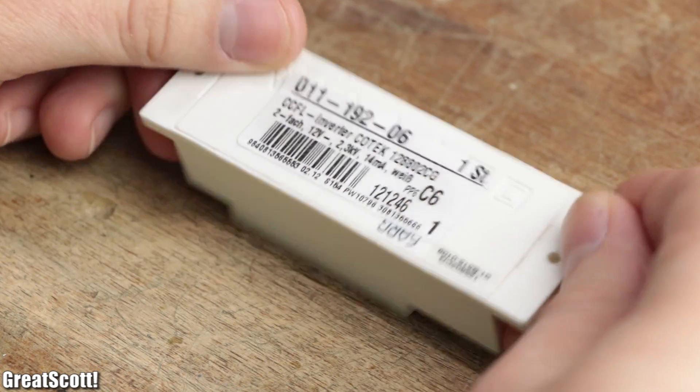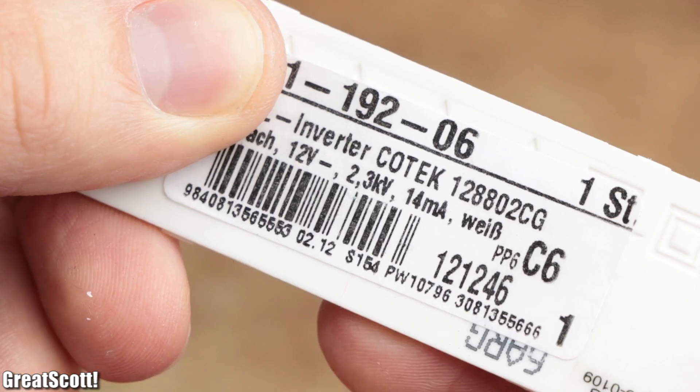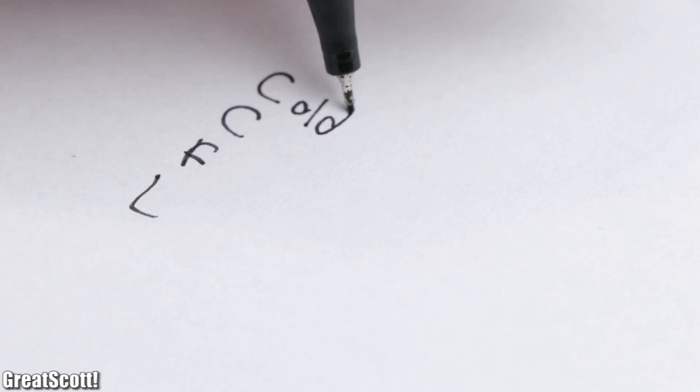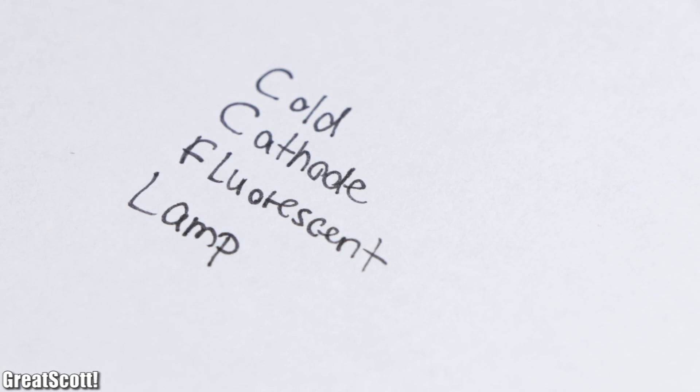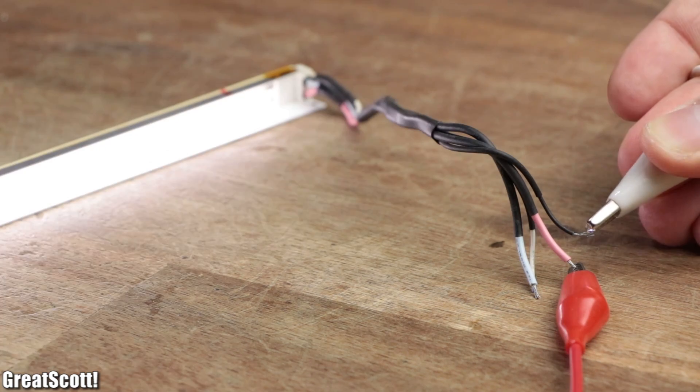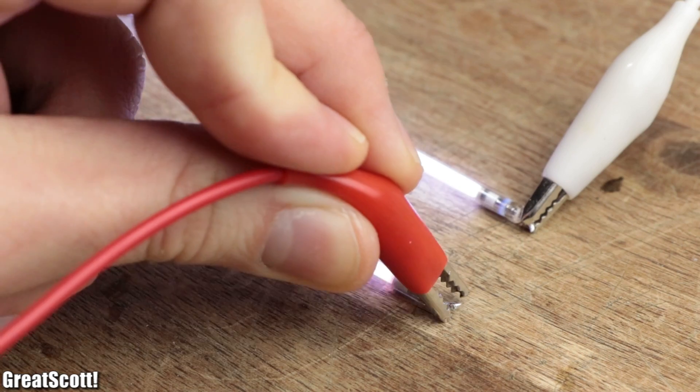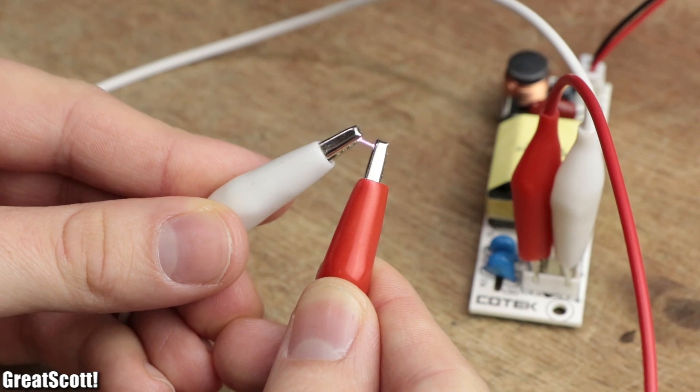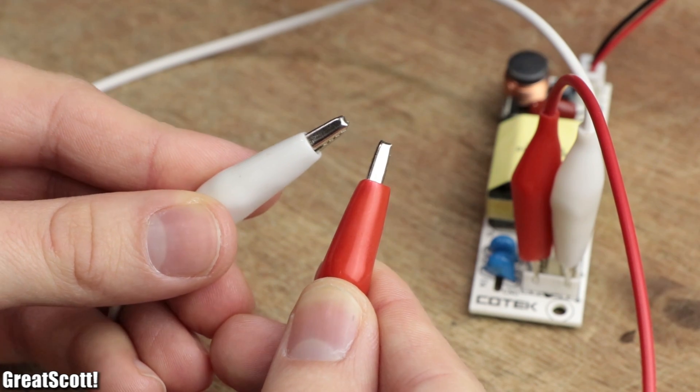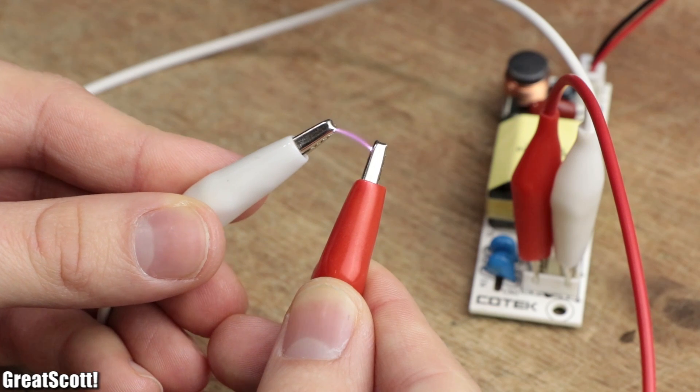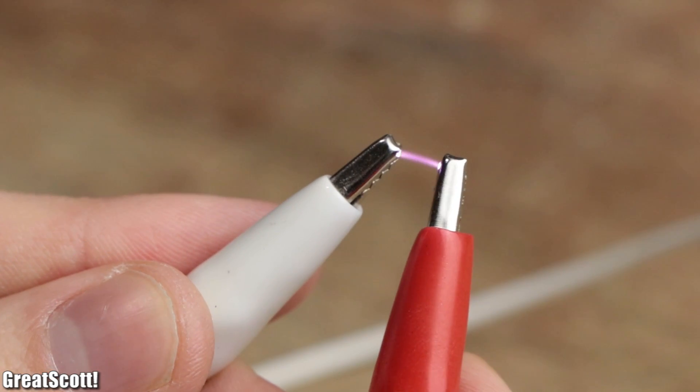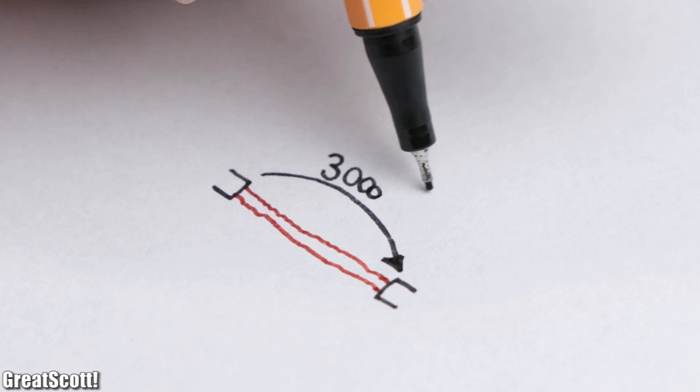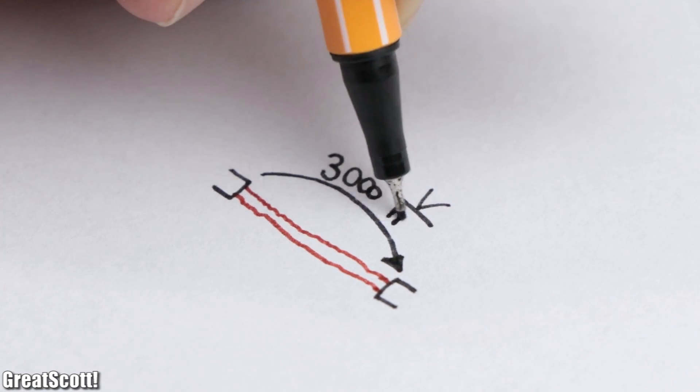Now the only circuit that I have lying around and can reach high voltages of around 2,300 volts is a CCFL inverter, aka a cold cathode fluorescent lamp inverter. Like the name implies, it is used to power cold cathode fluorescent lamps. But we can also create an electric arc with it by bringing the output wires awfully close together and then pulling them apart.